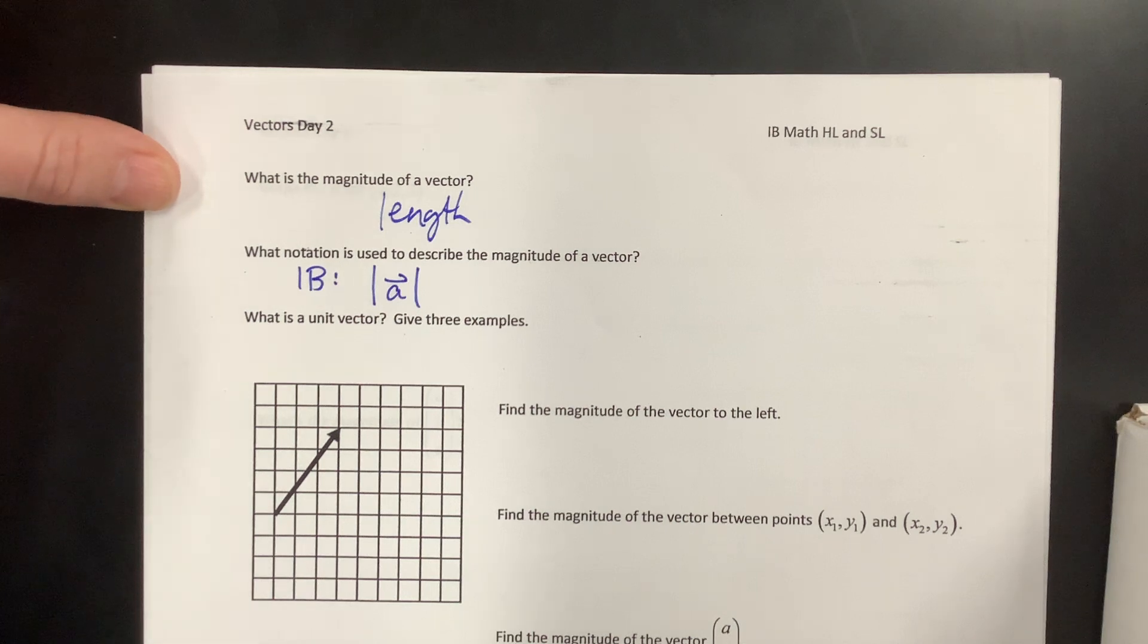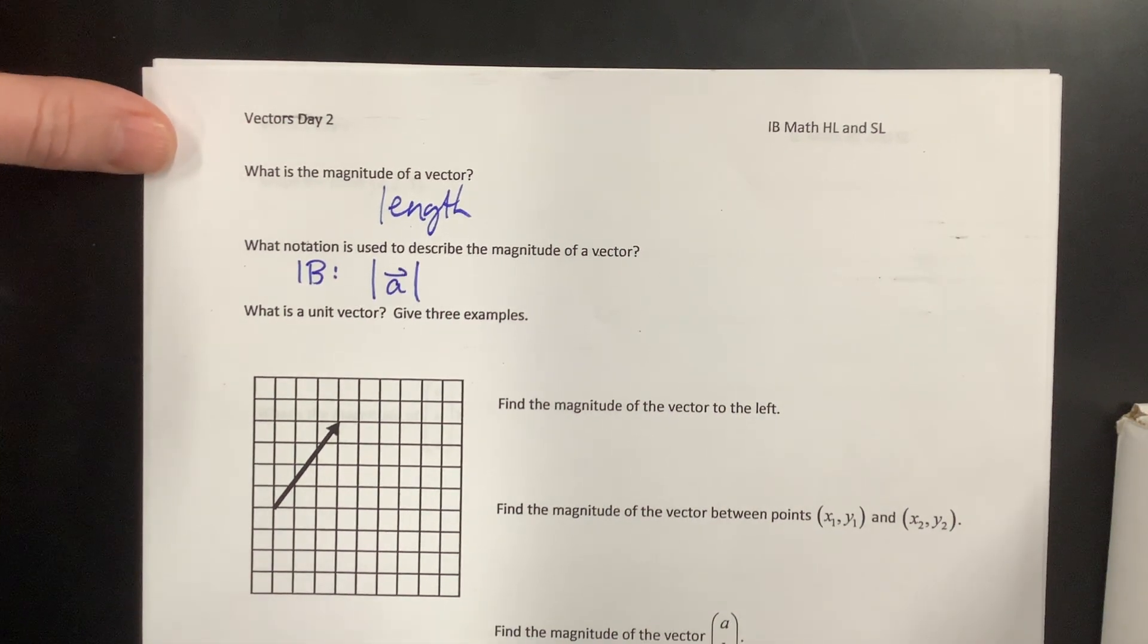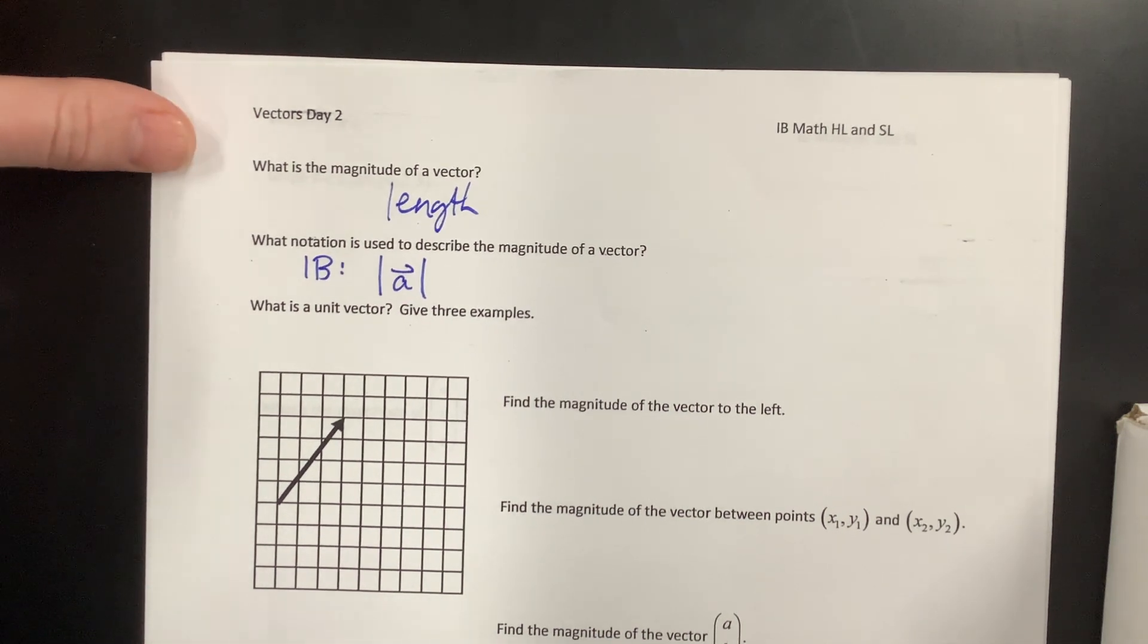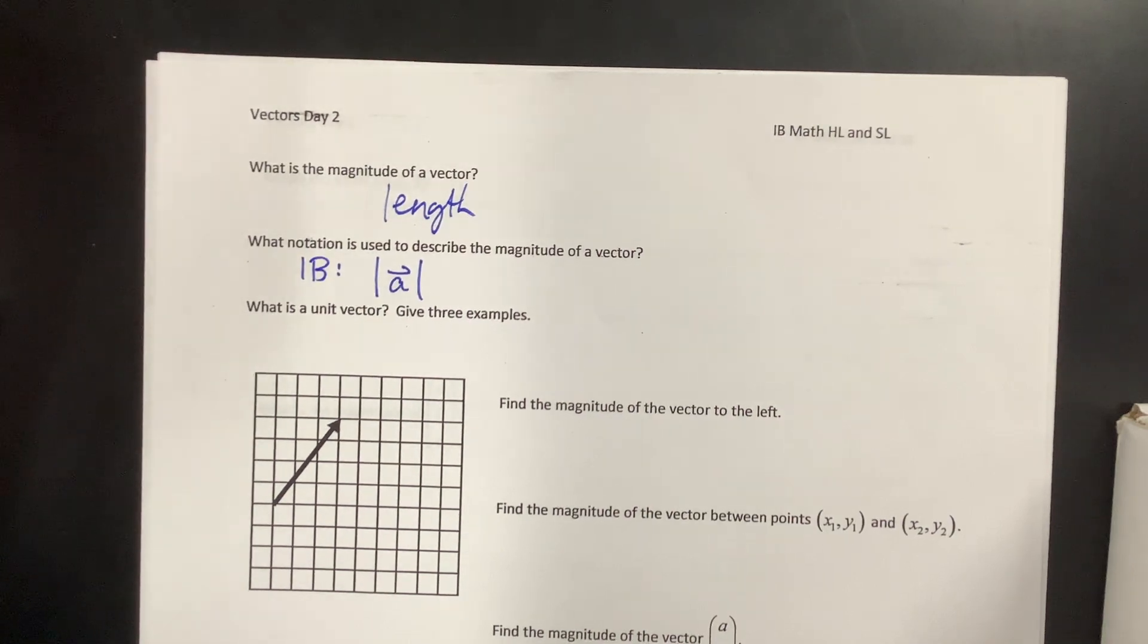But if you think about it, if your vector started at the origin, you want to know how far is it from the origin to the end of the vector. That's the same as the absolute value, so they actually are related. If that was confusing, don't worry, we'll talk about it more later.